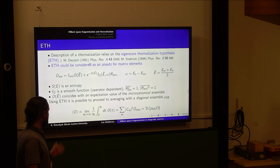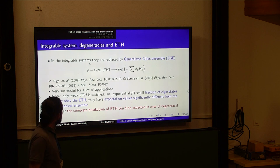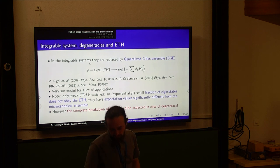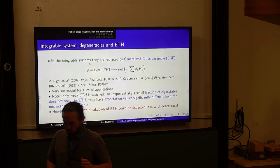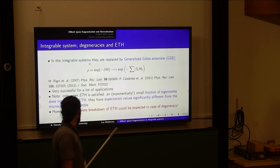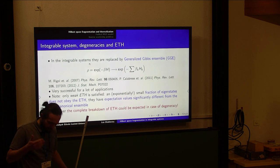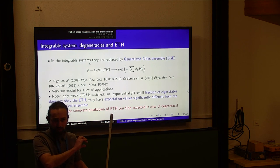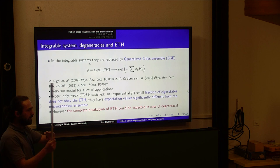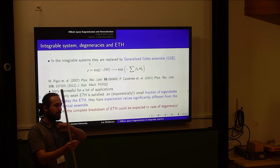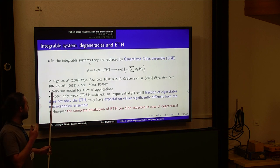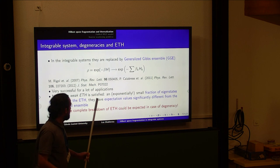It works, somehow. However, when people started thinking about integrable systems, an immediate problem arose. It turns out that the eigenstate thermalization hypothesis works only in a weak sense — meaning that for an exponentially small number of states there are violations of ETH. But if the violation is only for an exponentially small number of states, we can still neglect it and use ETH.